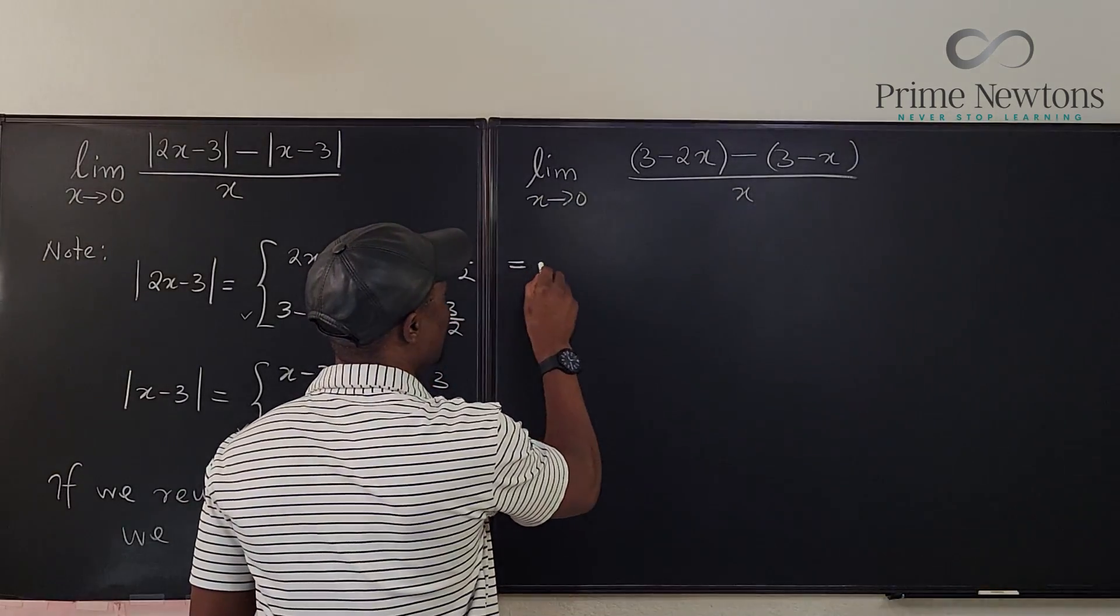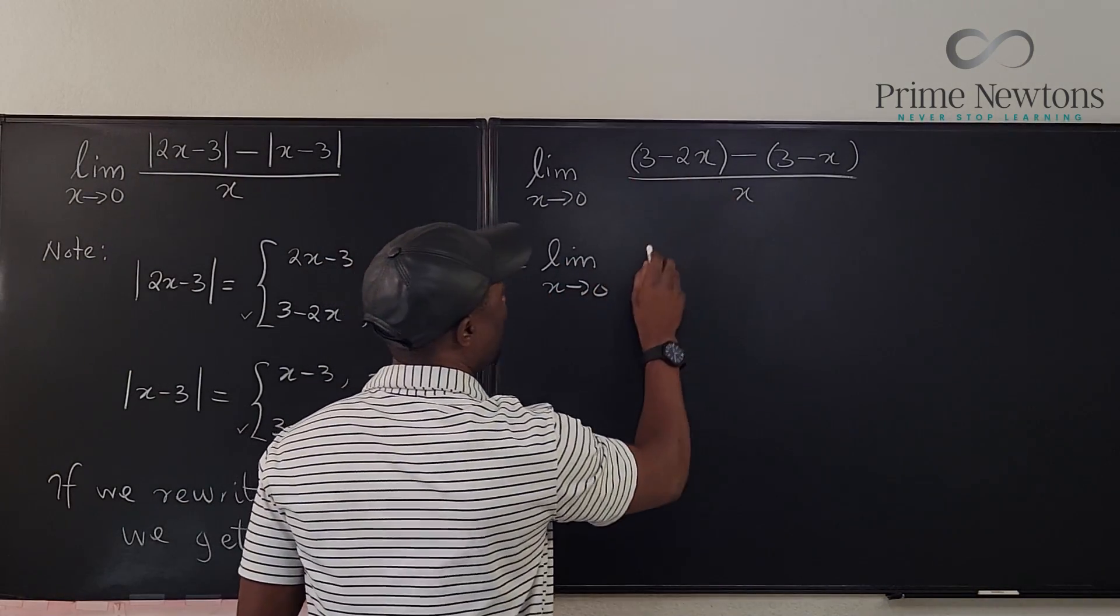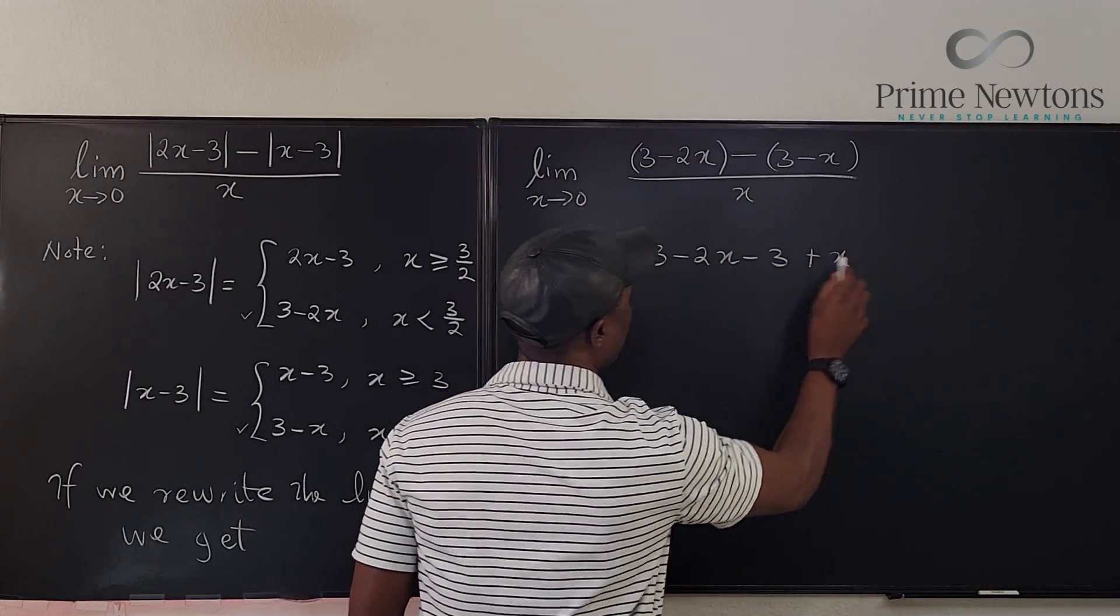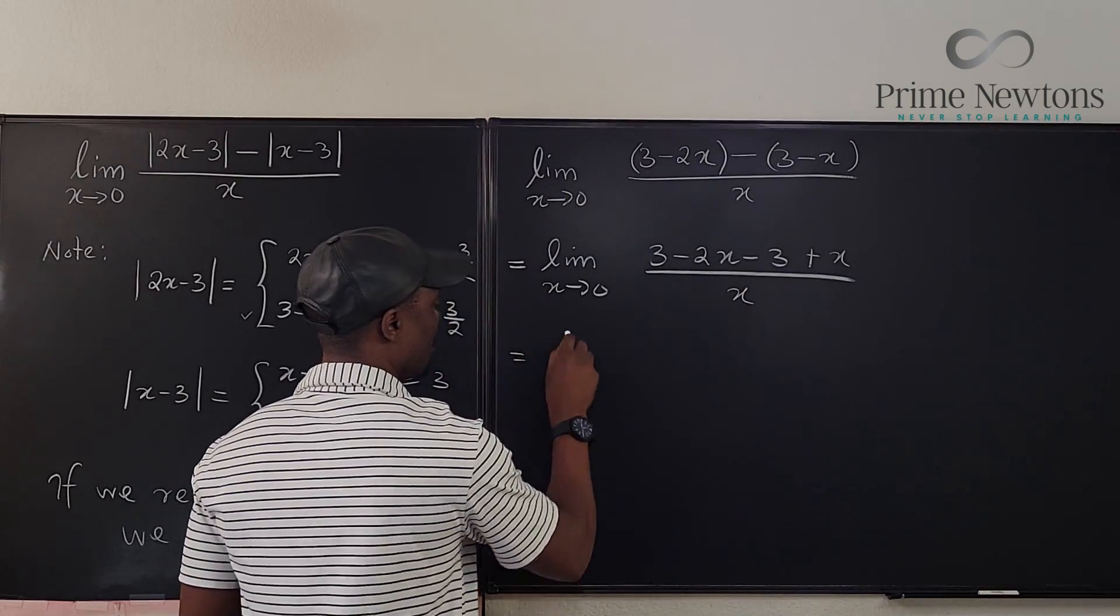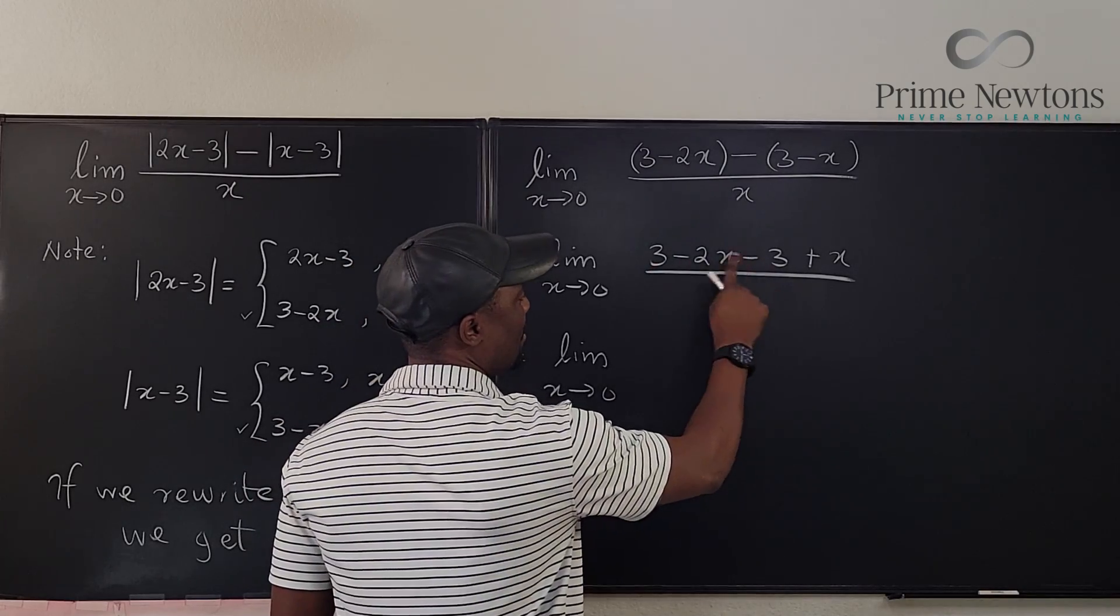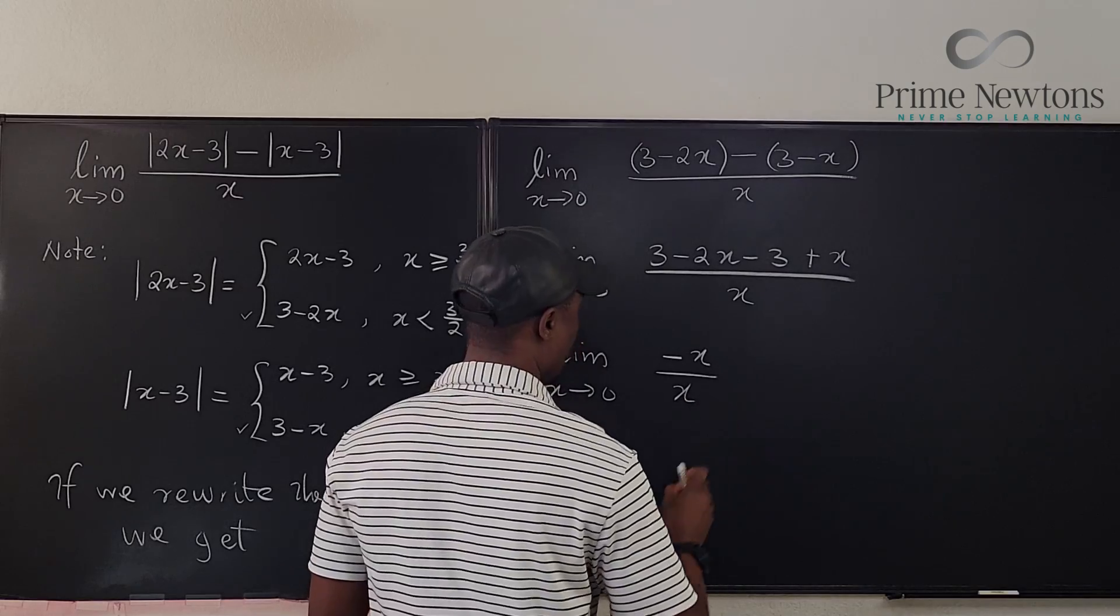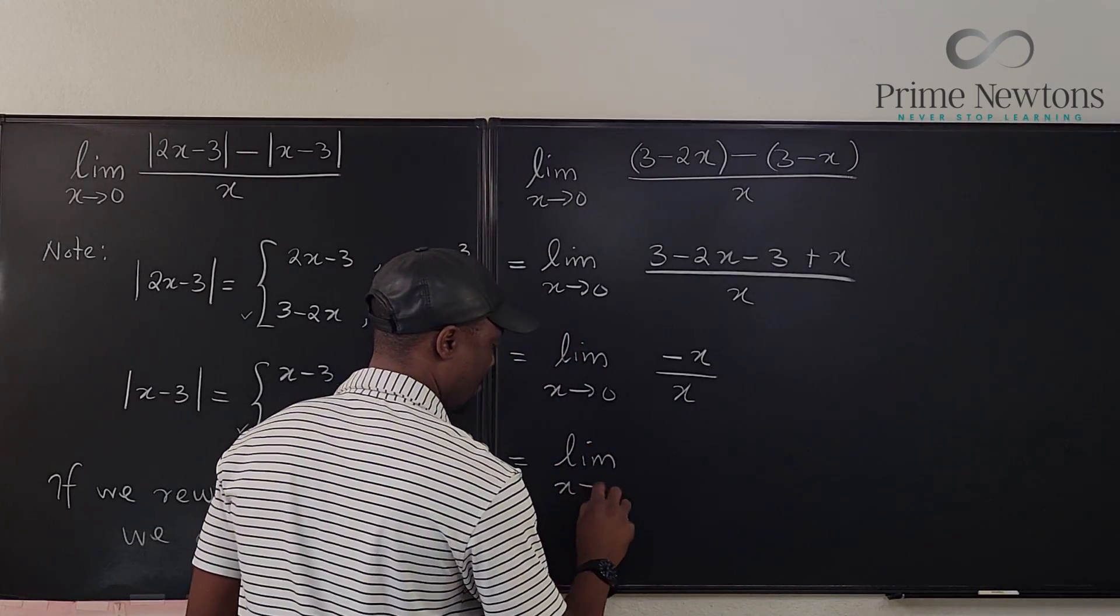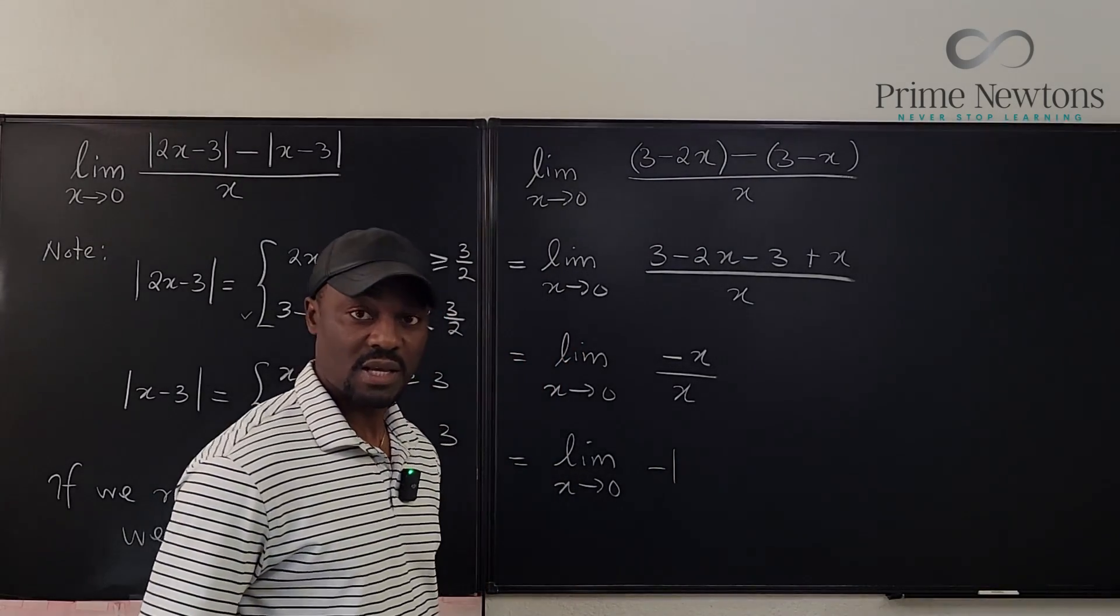Now what's this limit? This is the same thing as the limit as x approaches zero. The top part will be 3 - 2x - 3 + x all over x. And this is equal to the limit as x approaches zero of... 3 - 3 is zero, and -2x + x is going to be -x over x. So this is equal to the limit as x approaches zero of -1. The limit of a constant is constant.